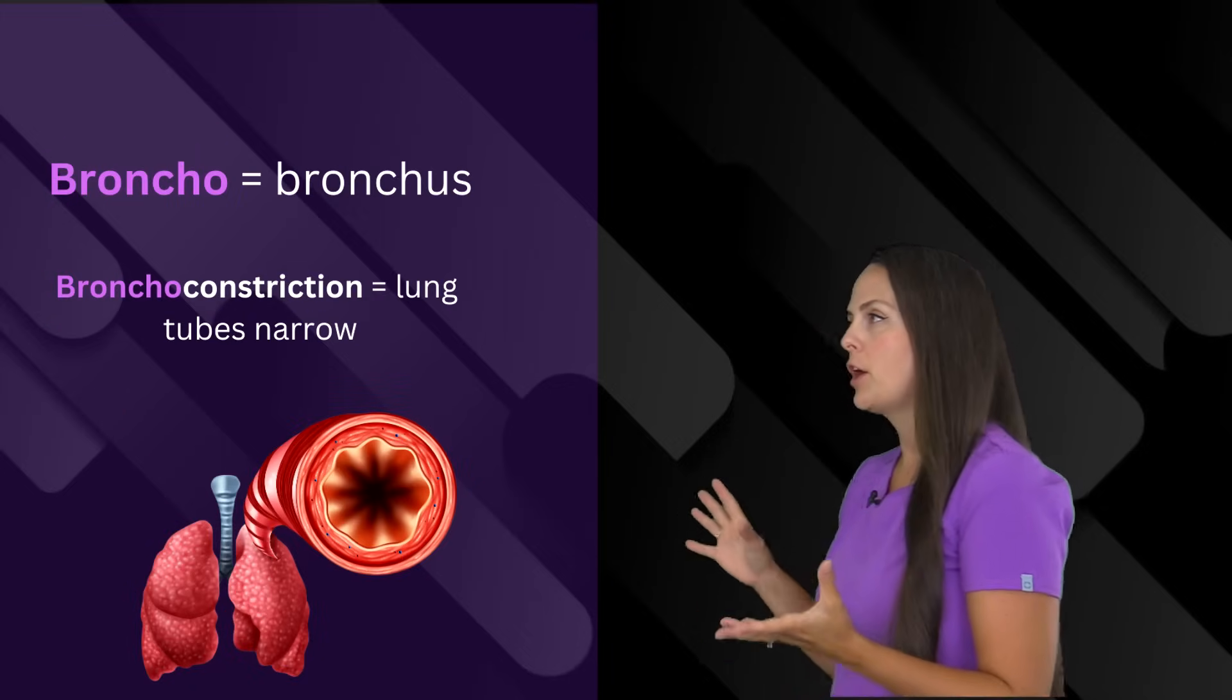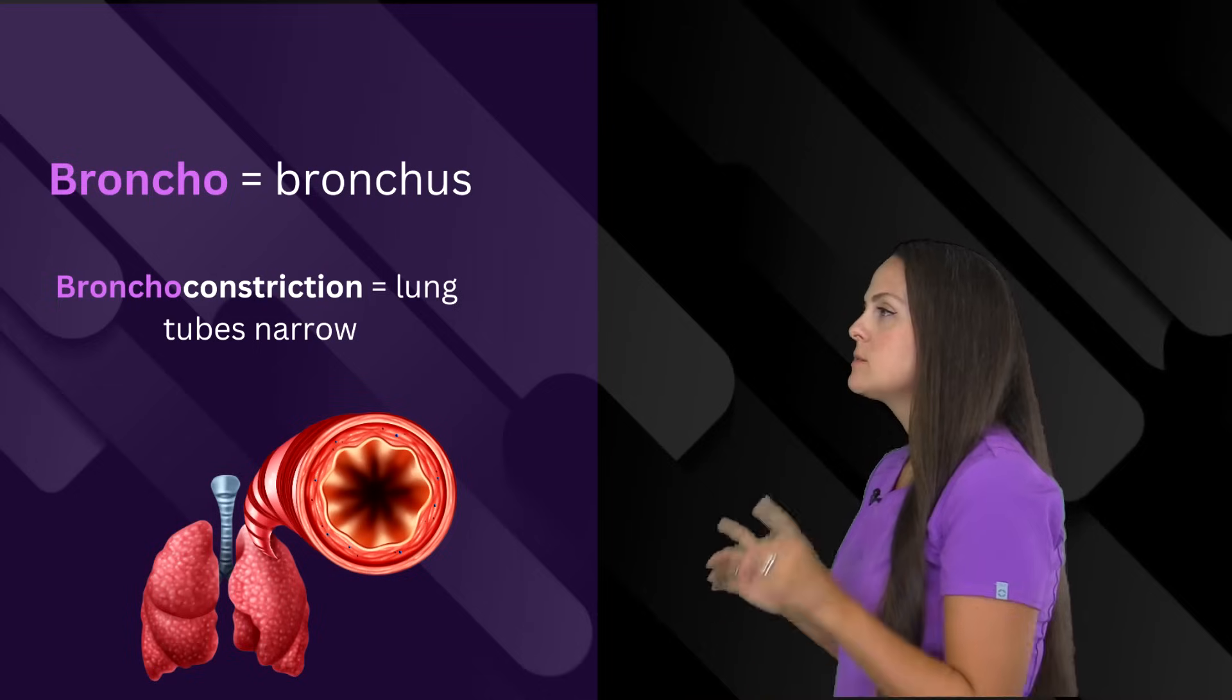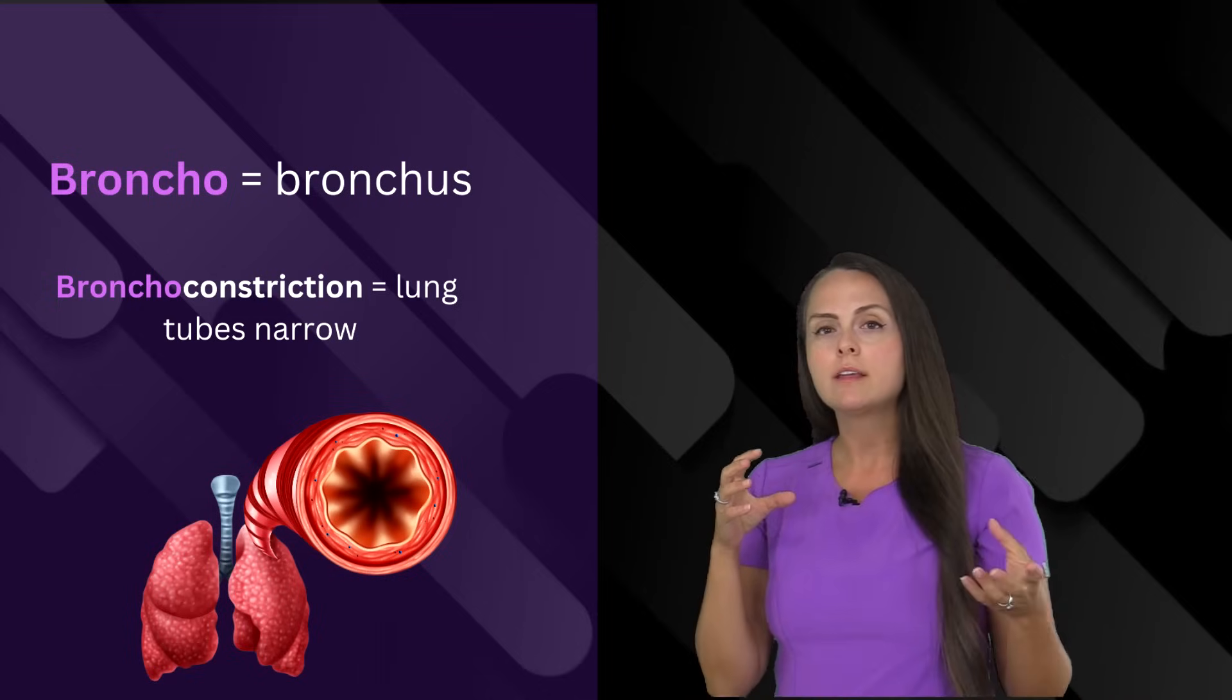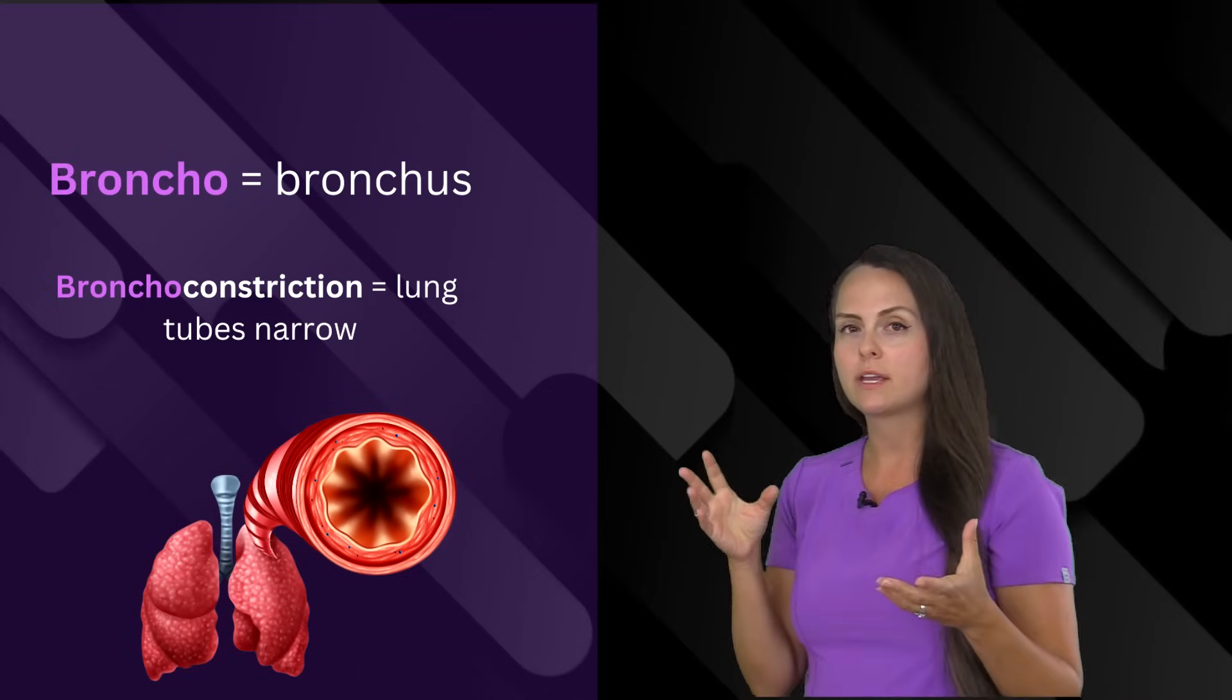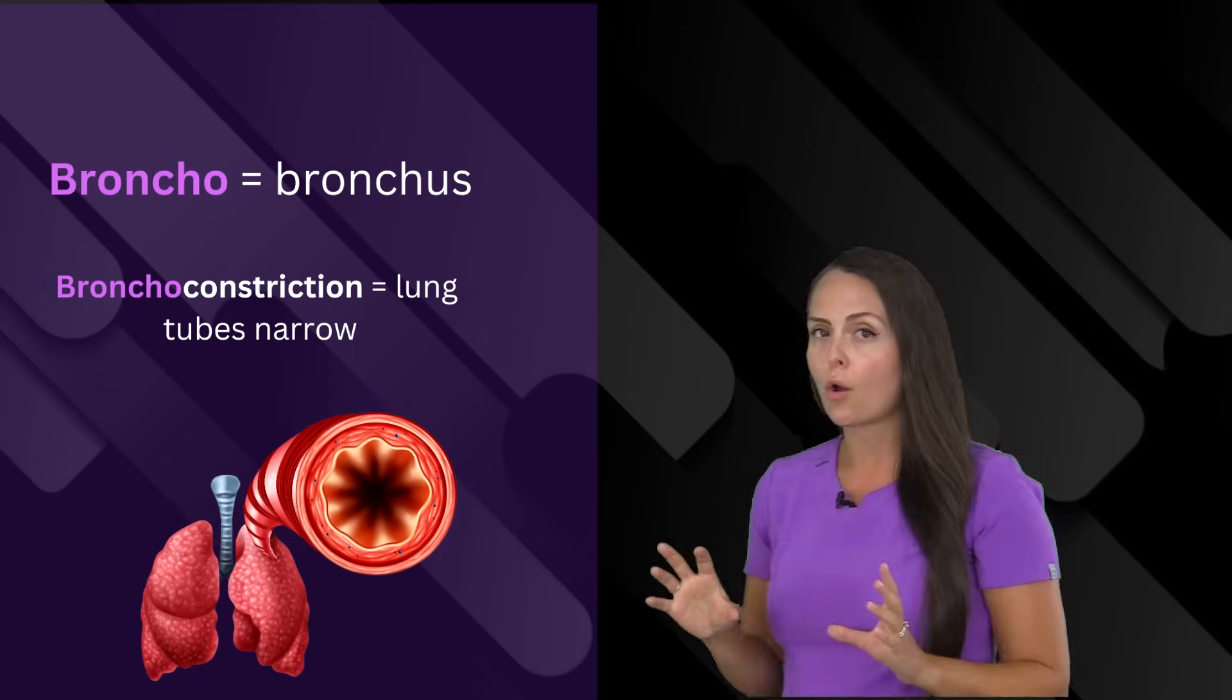And then we have bronco. Bronco deals with the lungs, particularly the large tubes in the lungs, like the bronchi or the bronchus. So when we say bronchoconstriction, we're talking about those large tubes that have narrowed.